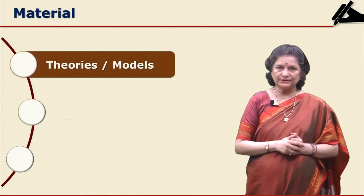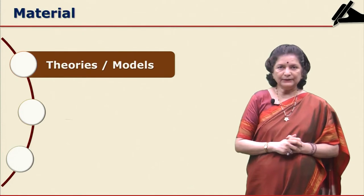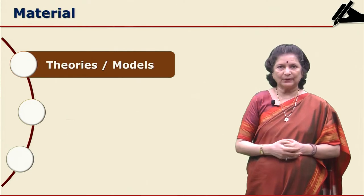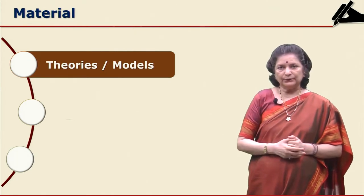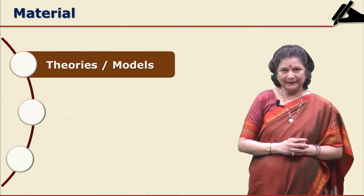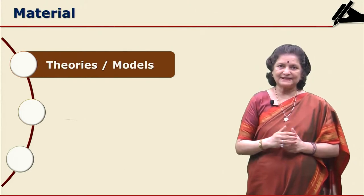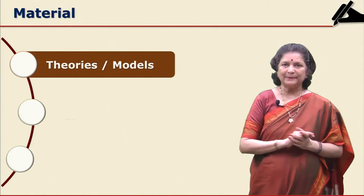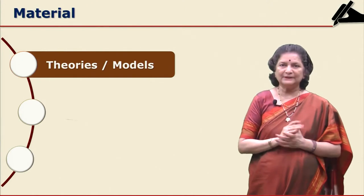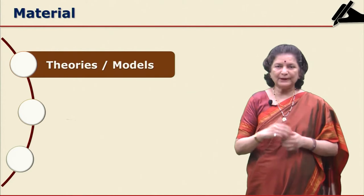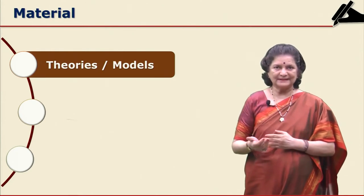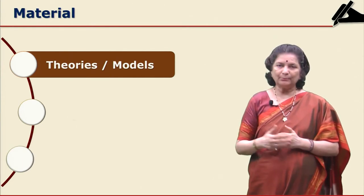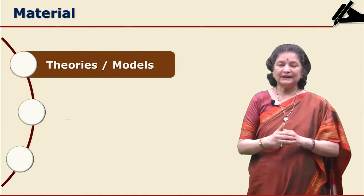Regarding the material you are using: if earlier researchers have used some models and you are going to use that model, or if you are not going to use the model — for example, if you are using role theory by Uday Parikh — then you should give justification as to why you are using it, what has been done by earlier people, which type of role theory they have used, and if you are using a different theory, why you are using it and what is the basis for your choice of theory.